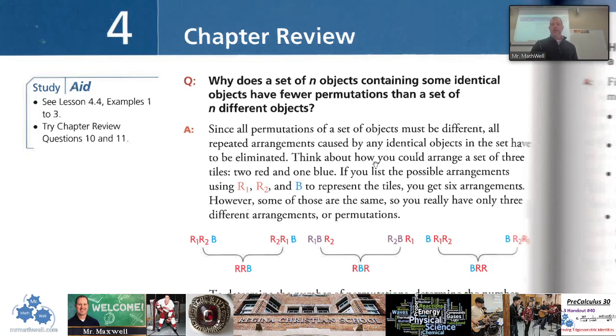Why are there fewer permutations when we have repeating objects? Well, you can read through this here, but the bottom line is if you take a look at this graphic down here below, if you have two identical red objects here, okay red 1 and red 2, if you flip those around you still have RRB, the red 1 and red 2 in different positions. If they're identical, that doesn't mean there's a different permutation. So when you have repeated objects there's always fewer because you can trade around all those identical ones and you don't have anything different.